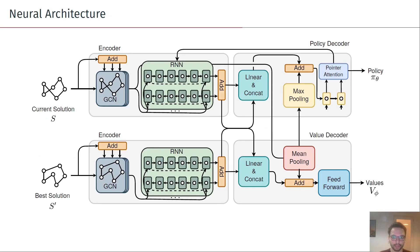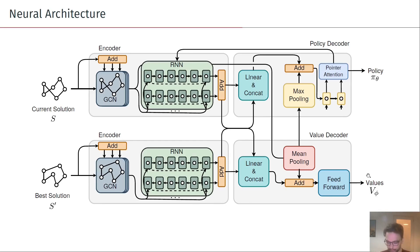This is how the neural architecture looks. Here we have the encoding units with the GCN and the RNN units, the policy decoder which performs the attention operation over the RNN features, and the value decoder that takes both the graph and the tour ordering features to output value estimates.